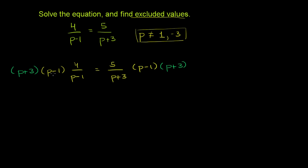And so what happens? We have a p minus 1 in the numerator, p minus 1 in the denominator, these cancel out. So you have just a 1 in the denominator, or you have no denominator anymore. And the left-hand side simplifies to 4 times p plus 3. Or if you were to distribute the 4, that is 4p plus 12.